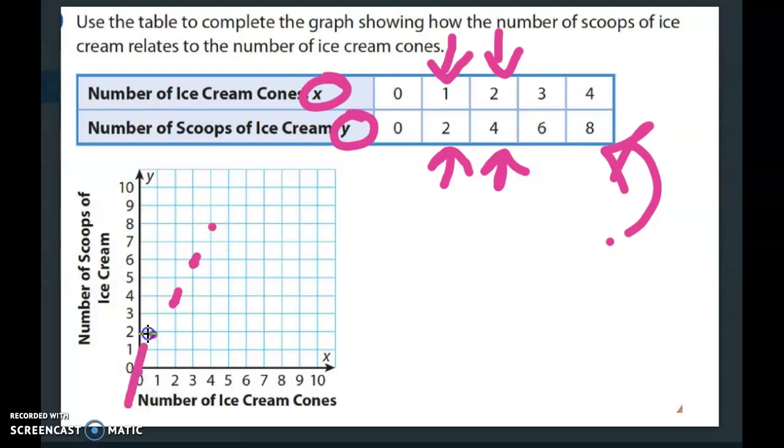So if you look, you can kind of see a little line going up there. If I put 5 on the end here, how many scoops of ice cream would that be? Well, that would be 10.